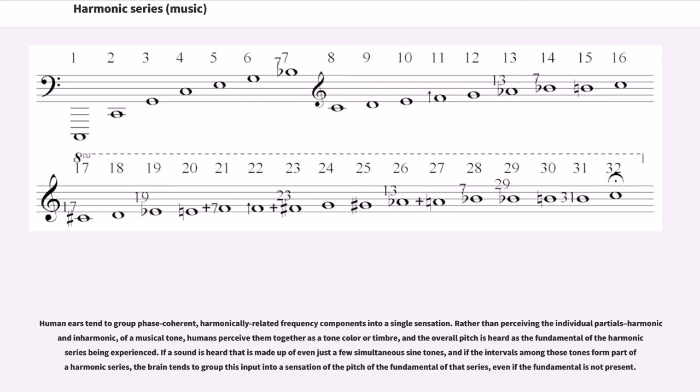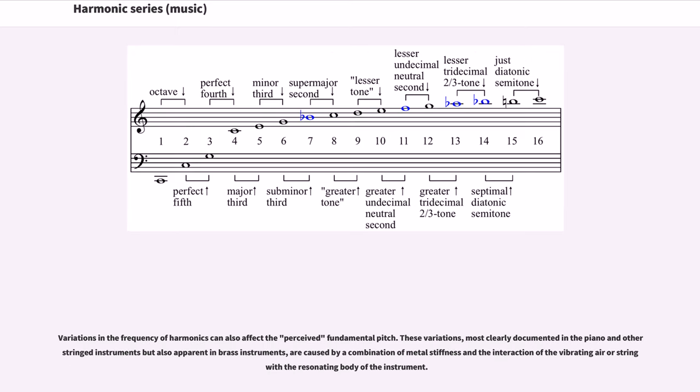Human ears tend to group phase-coherent, harmonically-related frequency components into a single sensation. Rather than perceiving the individual partials, harmonic and inharmonic, of a musical tone, humans perceive them together as a tone color, a timbre, and the overall pitch is heard as the fundamental of the harmonic series being experienced. If the sound is heard that is made up of even just a few simultaneous sine tones, and if the intervals among those tones form part of the harmonic series, the brain tends to group this input into a sensation of the pitch of the fundamental of that series, even if the fundamental is not present.